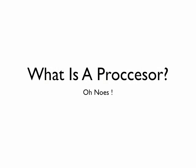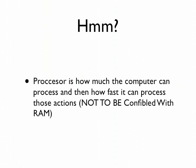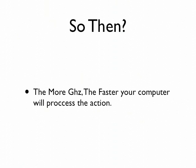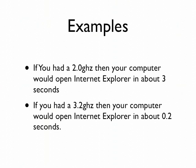What is a processor? A processor is how much a computer can process and how fast it can be processed, not to be confused with RAM. The more gigahertz, the faster your computer will process the action you have told it to.